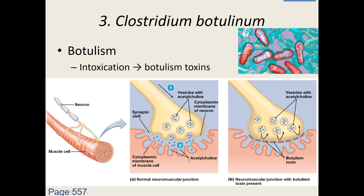That becomes an issue because you have a really important skeletal muscle — your diaphragm — that needs to contract. If your diaphragm cannot contract, you don't breathe, and it ultimately leads to death. There are three ways we generally suffer from this bacteria. One is foodborne botulism, where you ingest a large quantity of the toxin — not the bacteria — from improperly canned foods. Being an endospore-making bacteria, it can survive some normal canning processes, grow, reproduce, and produce these toxins.